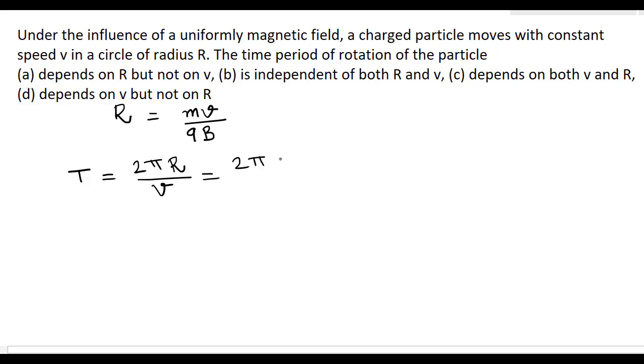Now put the value of R, that is mv divided by qB and v, so v cancels and this is equal to 2πm divided by qB. Now the time period is independent of v and R, so B is the option.